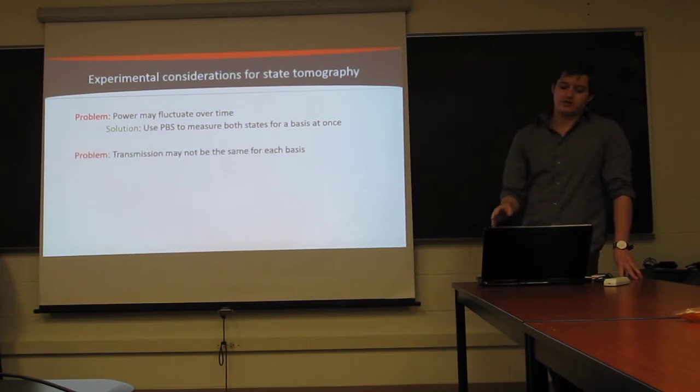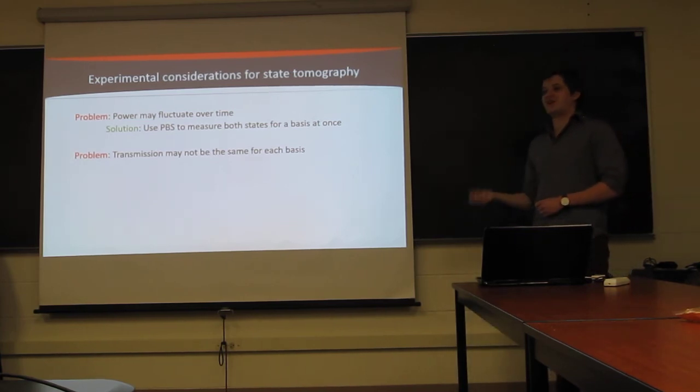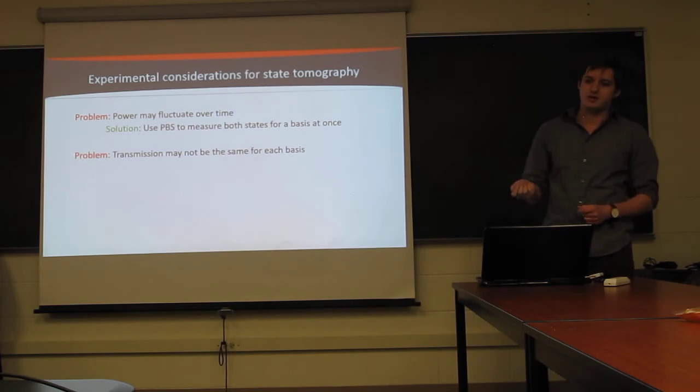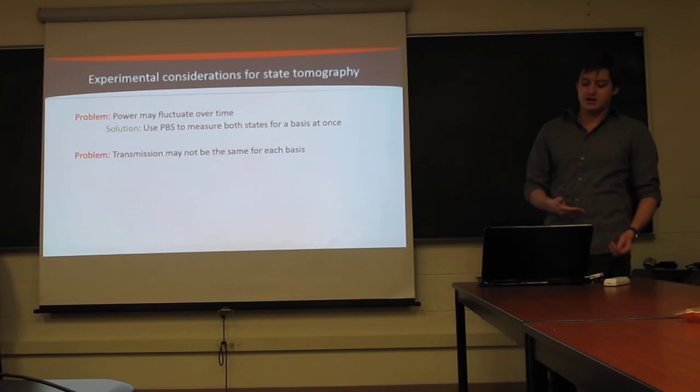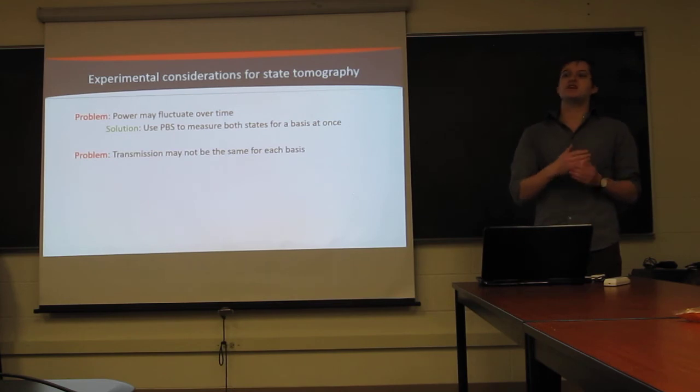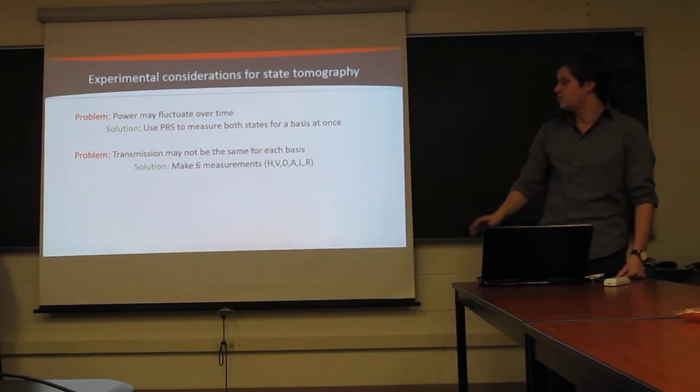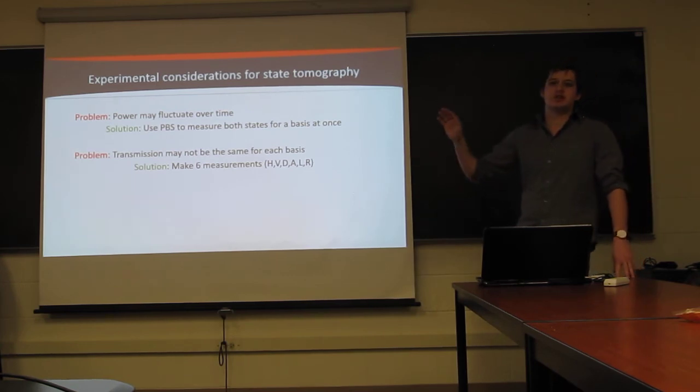Second, you could have a problem where transmission through your system and efficiency may not be the same for each basis. This is a problem that we encountered when we were working with orbital angular momentum modes, where we could only couple in linear modes about half as well as circular modes. In which case, using one set of bases in order to normalize everything suddenly doesn't work anymore, because you could have twice as many counts for a single measurement, but it actually corresponds to half the probability. Then, the solution there is simple. It's what we always do. You just take six measurements. You measure in all of the desired states you want to project onto, rather than using the statistics to get you your measurements.